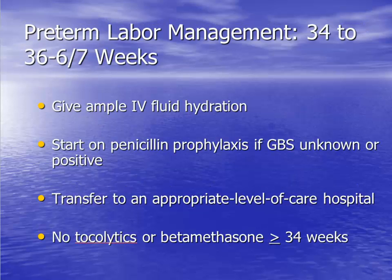Women in preterm labor between 34 and 36 and 6/7 weeks are managed less aggressively. Tocolytics and betamethasone are not administered because of the lack of benefit at this late gestational age. Intravenous fluids can be given to help decrease contractions, group B streptococcus prophylaxis is administered, and the patient is transferred to the appropriate caregivers.